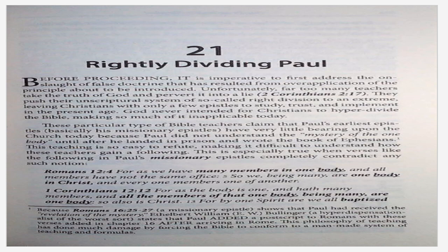Chapter 21: Rightly Dividing Paul. Before proceeding, it is imperative to first address the onslaught of false doctrine that has resulted from over-application of the principle about to be introduced. Unfortunately, far too many teachers take the truth of God and pervert it into a lie — 2 Corinthians 2:17. They push their unscriptural system of so-called right division to an extreme, leaving Christians with only a few epistles to study, trust, and implement in the present age. God never intended for Christians to hyper-divide the Bible, making so much of it inapplicable today.